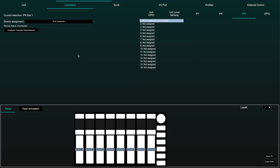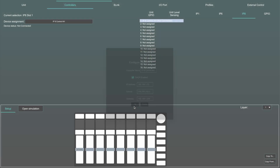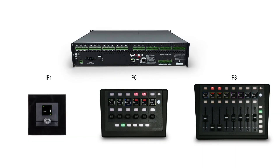Devices can receive IP addresses from a DHCP server present in the network by activating the relevant option for each device. A maximum of 64 IP-1 controllers, 16 IP-6 and 16 IP-8 controllers can be connected to an AHM device.